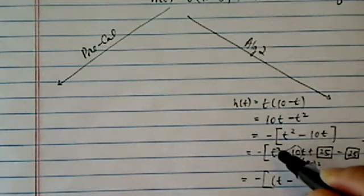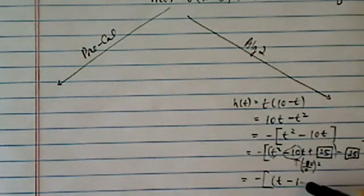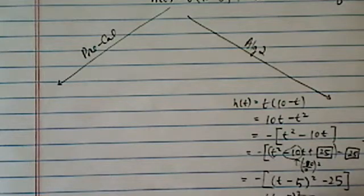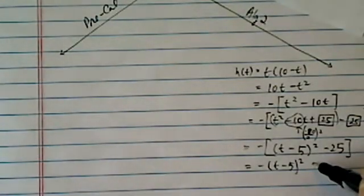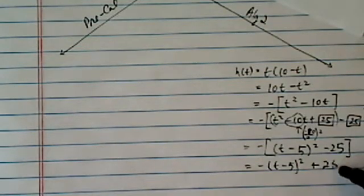I'm going to regroup the first three, it becomes t minus 5 squared minus 25. Now I'm going to distribute this minus sign, not inside, I'm going to leave the square term alone, not opening it up, and then I have a plus 25 here.